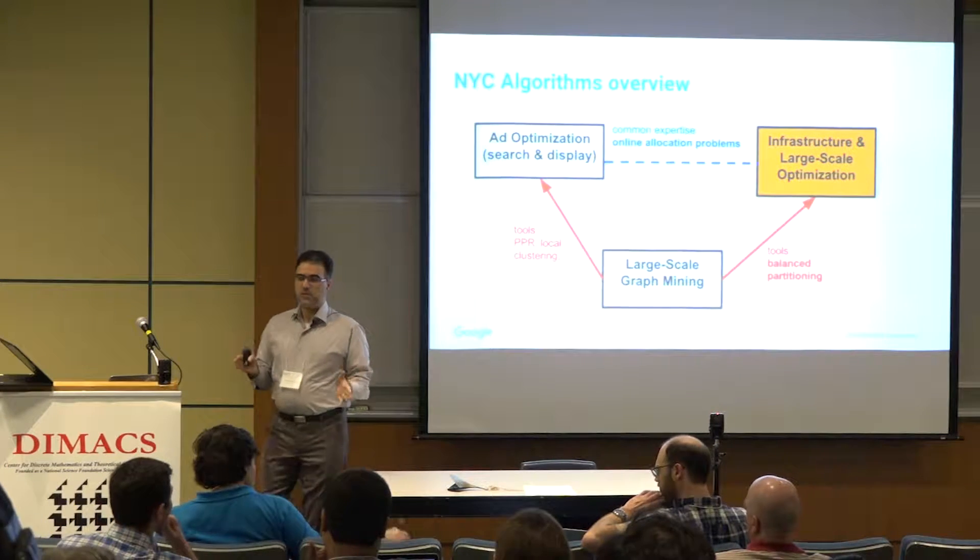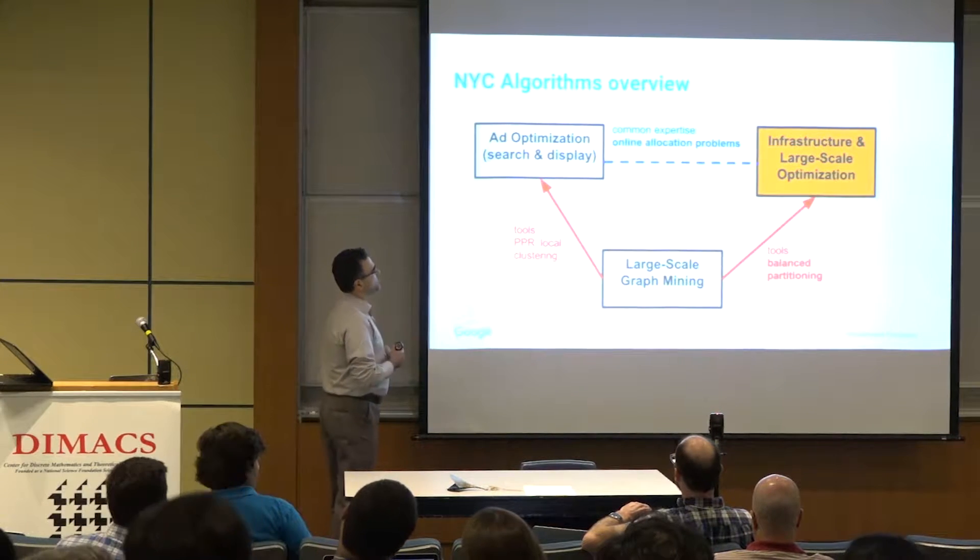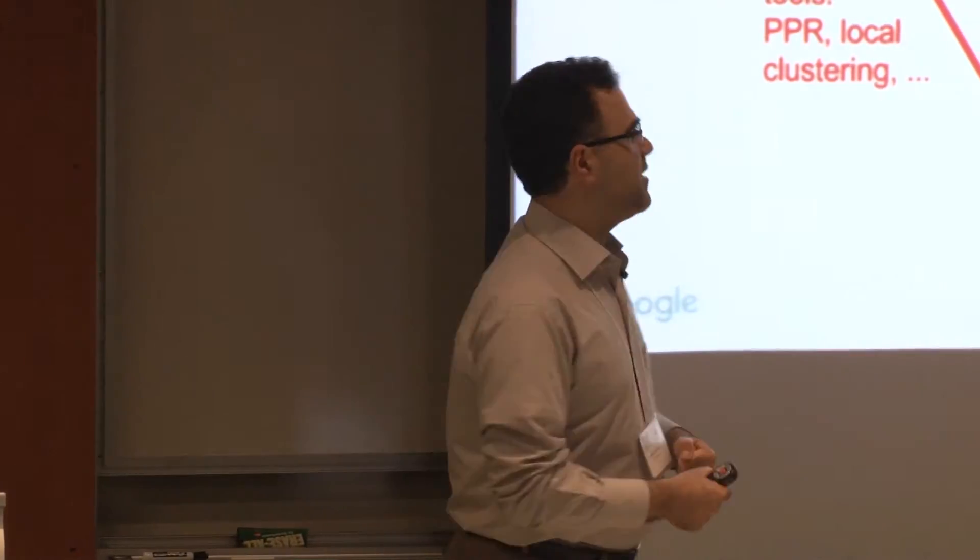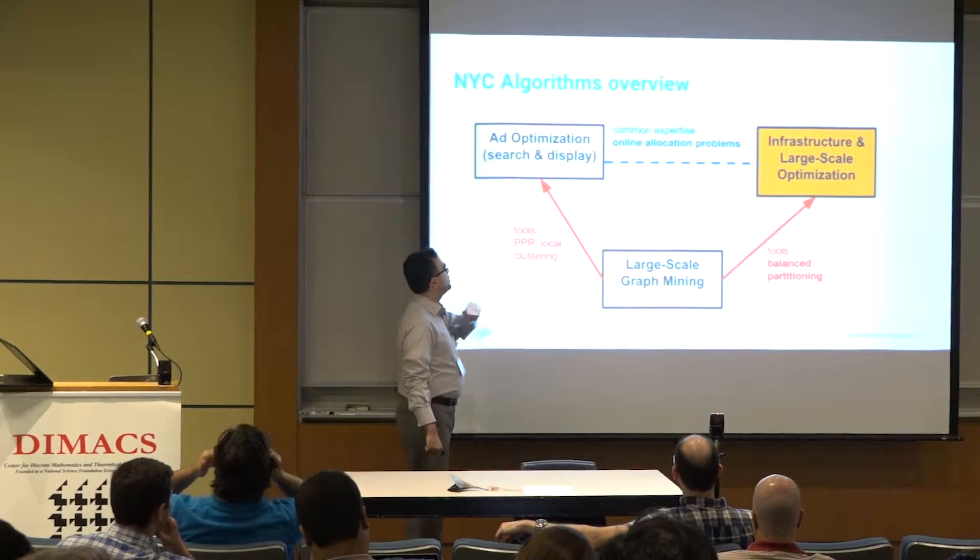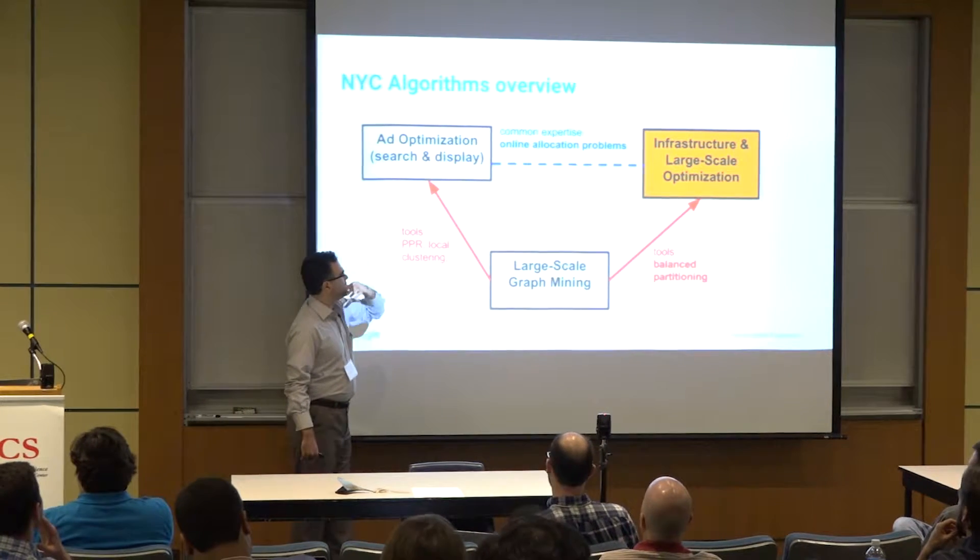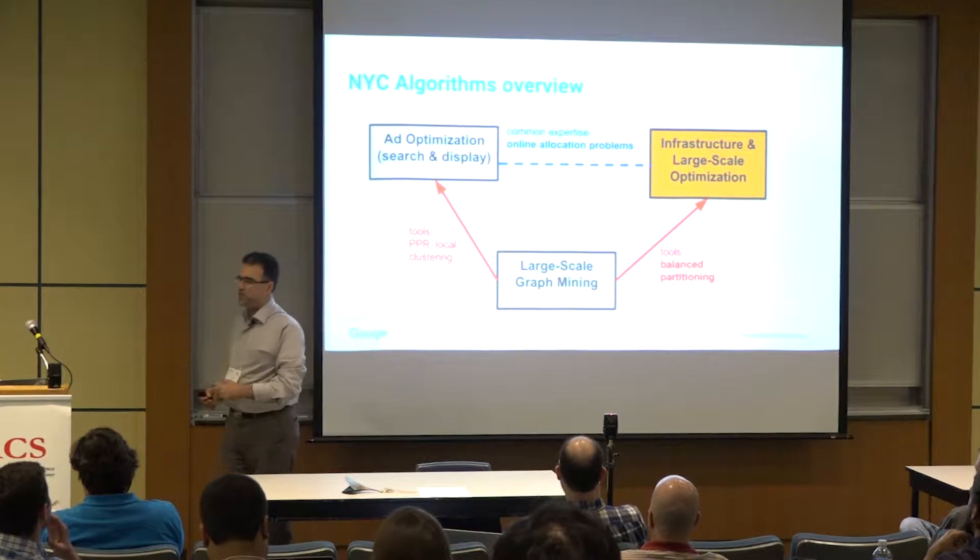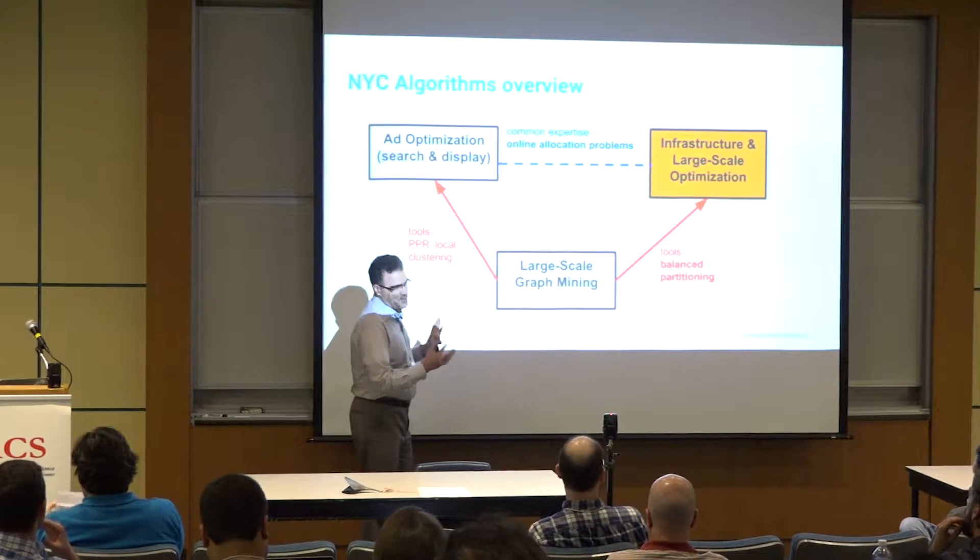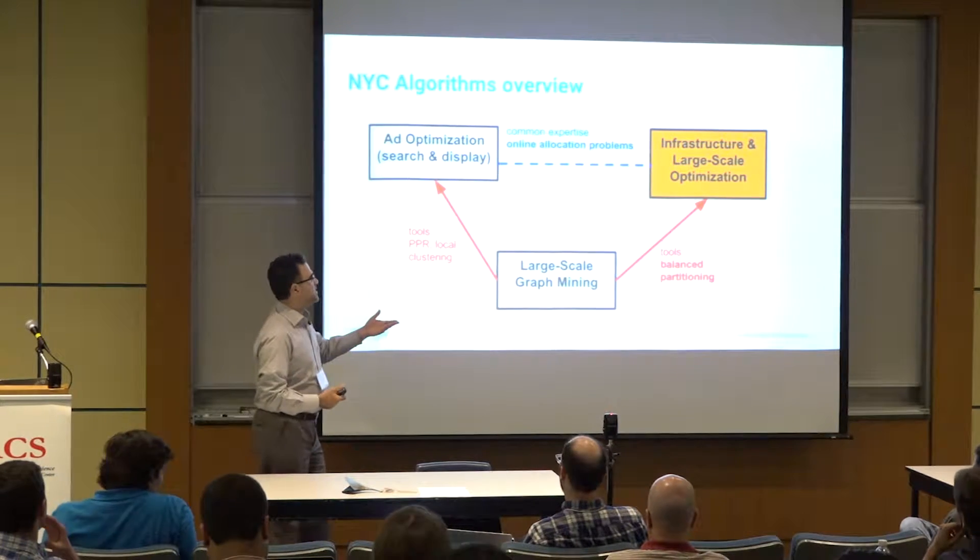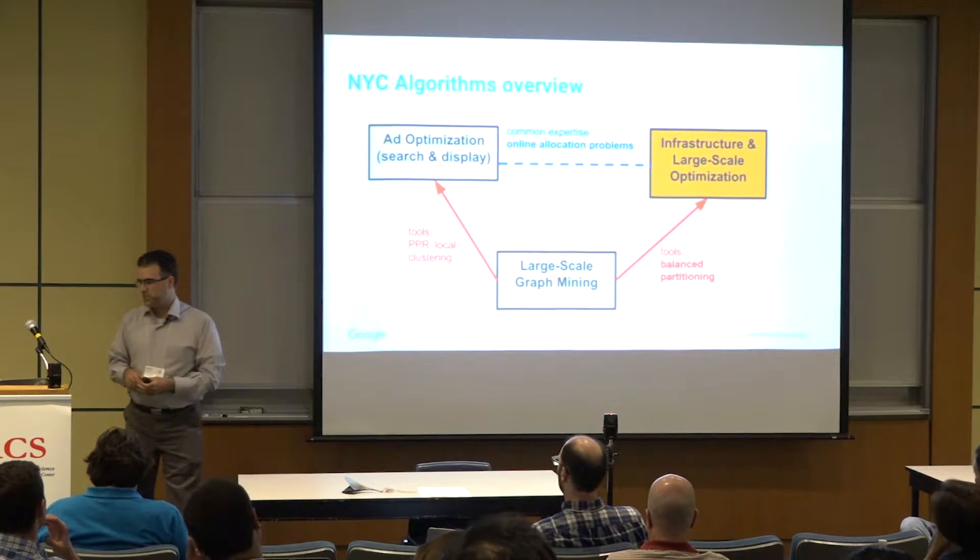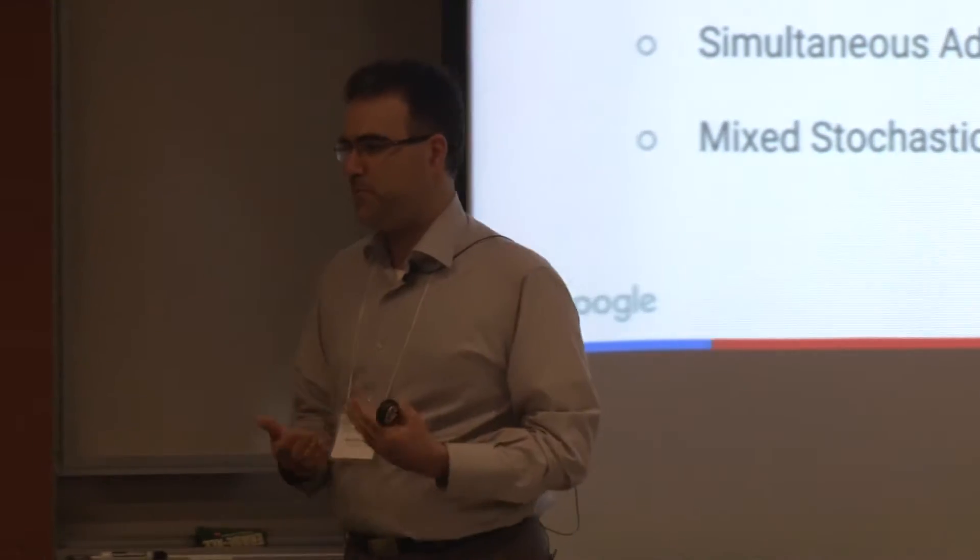We have a small research team for doing algorithm research in the Google New York team. The Google research team in New York has several machine learning and data mining groups. We have in the order of 15 people in algorithms. Most of our activities have been in ads optimization and online advertising, mechanism design, and online optimization. We also have a large-scale graph algorithm library for the rest of Google where we provide these types of tools for other teams. Very recently, basically the last one and a half years, we have started working on some infrastructure optimization problems for some projects at Google.